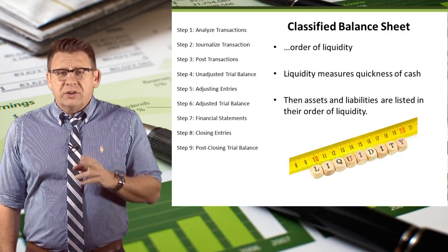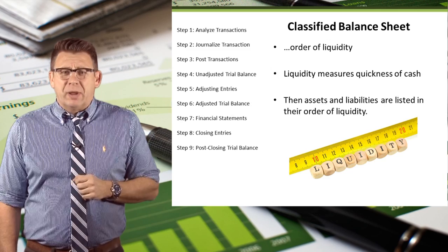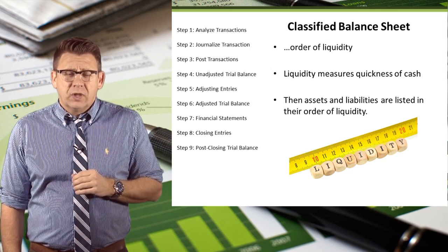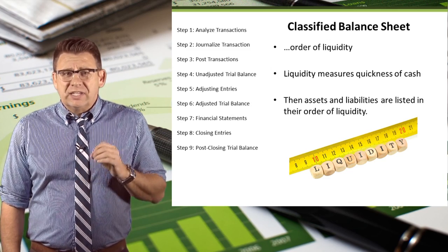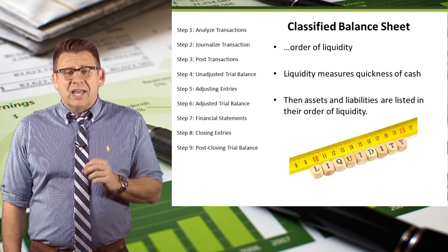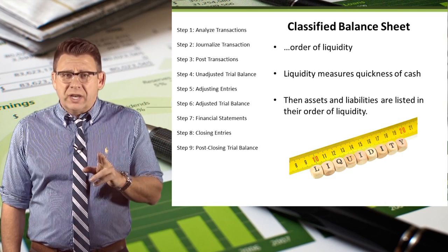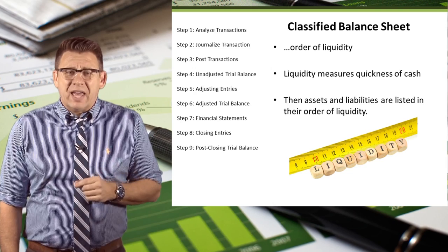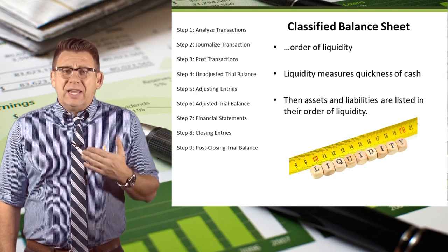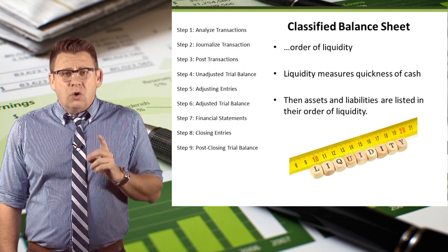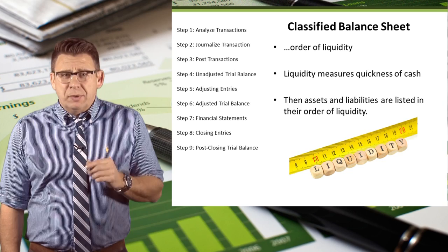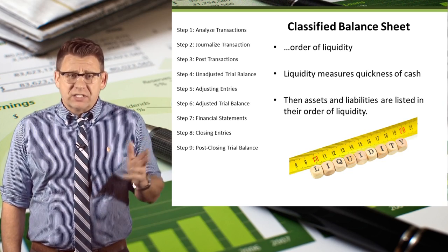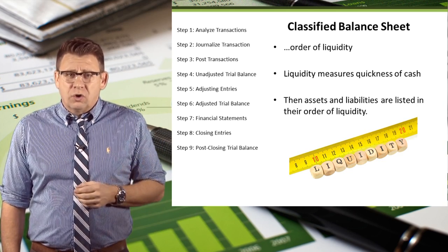In order to understand how to prepare a classified balance sheet, we need to learn a few new terms. A classified balance sheet lists assets and liabilities in order of their liquidity. Liquidity measures quickness of cash, meaning how quickly assets will be turned to cash, or how soon liabilities need to be paid. Assets and liabilities are then listed in their order of liquidity.